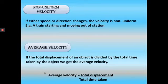Average velocity: if the total displacement of an object is divided by the total time taken by the object, we get the average velocity. So average velocity is equal to total displacement divided by total time taken.